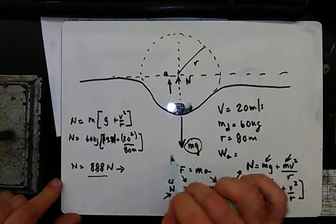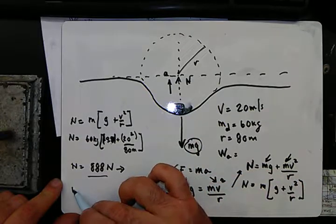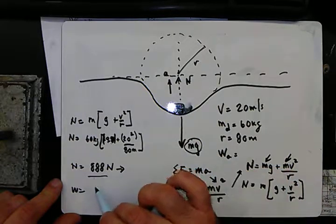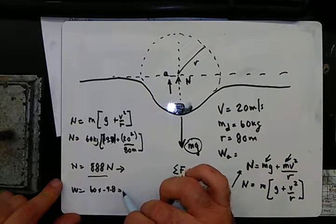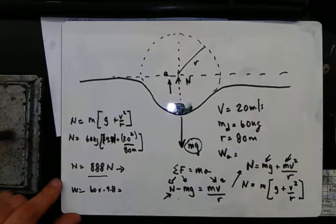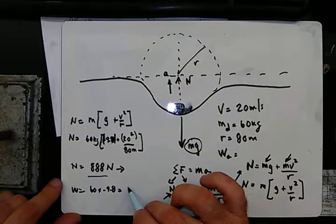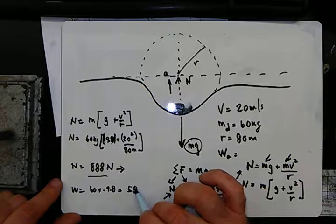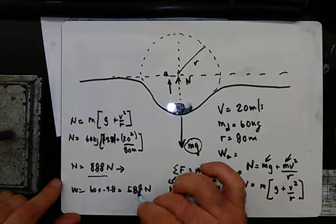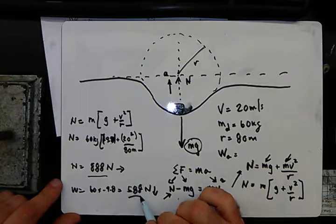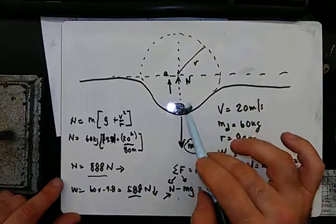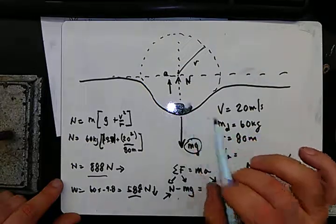For comparison, the normal weight is just mg: 60 times 9.8 equals 588 newtons downward. You can see there's quite a difference — about 300 newtons more force felt at the bottom of the dip compared to driving in a straight line.